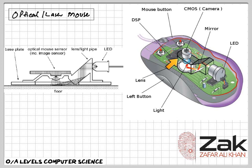This information is then translated into X and Y coordinates to indicate mouse movement, which are sent to the computer, and the computer manages to move the cursor on the screen.